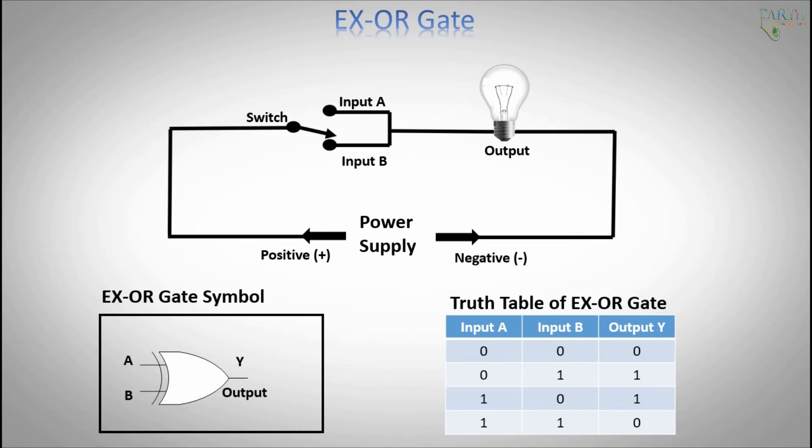In other words, the output is 1 when there are an odd number of 1s in the inputs. IC number is 74LS86, 14 pin.